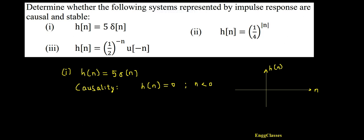So it is going to be 5 times del of n. What is del of n? Del of n is the impulse signal which exists only at n equal to 0. So let me plot that. It exists only at this position, and what is its amplitude? Its amplitude is 5.